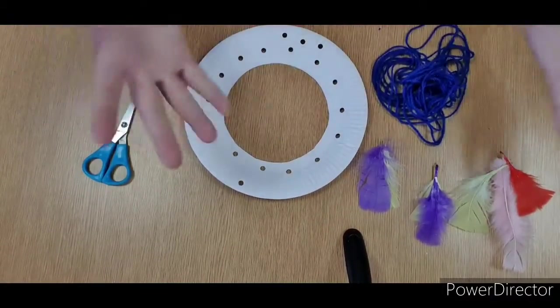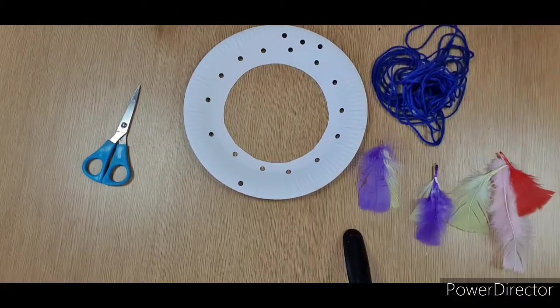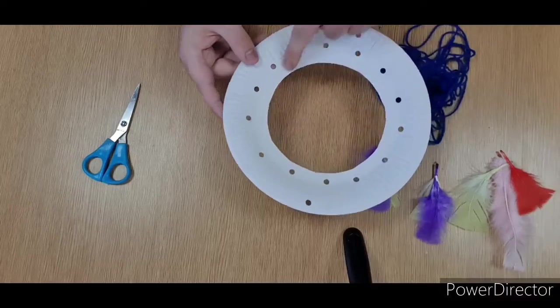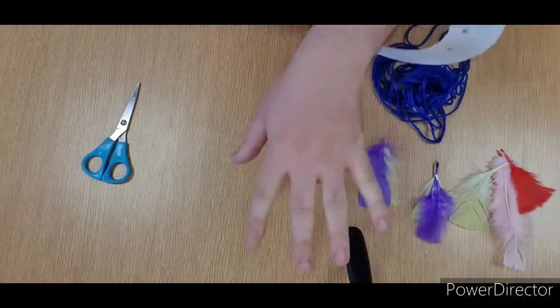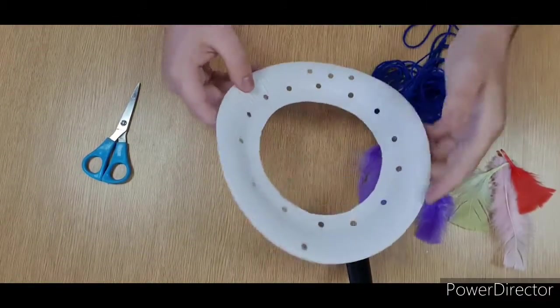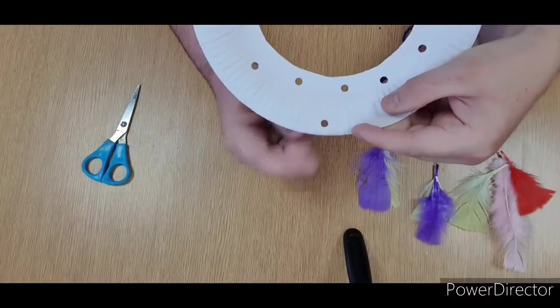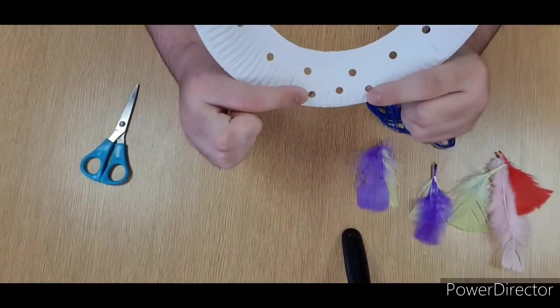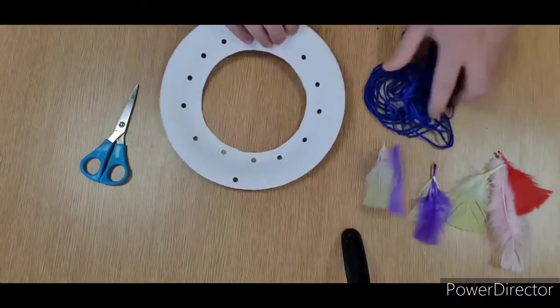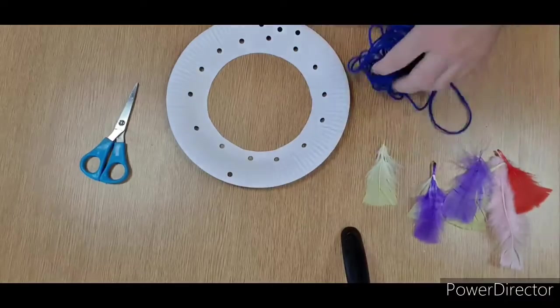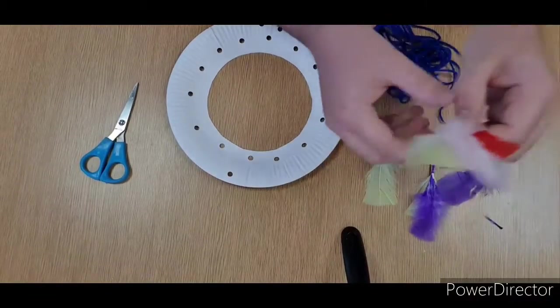If you are just watching along and you want to do this at home, you're going to need a paper plate. Cut the middle out first, then make holes all the way around. You want one hole at the top and three holes at the bottom. Once you've done that, you're going to need quite a bit of wool and some feathers, any color would do.